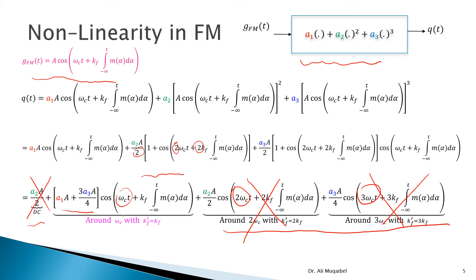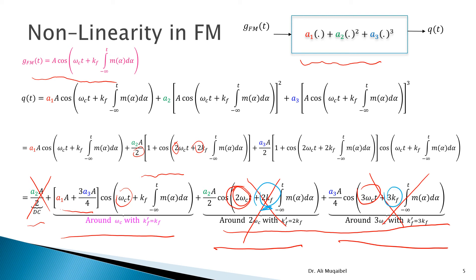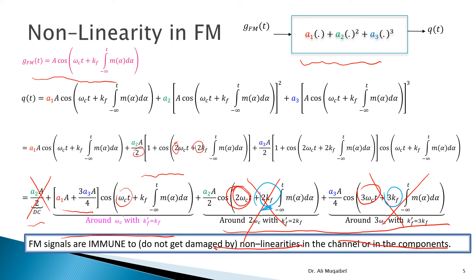FM retains the angle, and changing the amplitude is just a change in power. We conclude that if an FM signal goes through non-linearity, we can still recover our signal without losing or distorting the message. Notice also that we get one FM signal at ωc, another at 2ωc, and a third at 3ωc — differing in carrier frequency and in bandwidth, since kf gets scaled: we have 2kf and 3kf respectively. So we can get FM signals at different frequencies with wider bandwidths, and we can use this to our advantage.